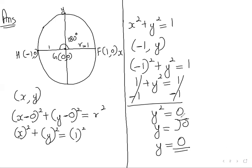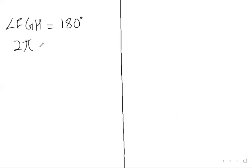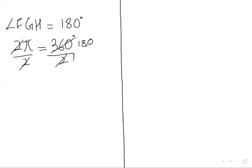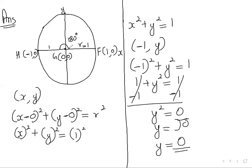Now we need this in radians. The full circle is 360°, which equals 2π radians. So 180° equals π radians. Therefore angle FGH = π radians. Going around the full circle once more adds 2π each time, so from F to H the angle can also be 3π, 5π, and so on.